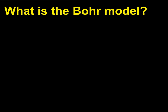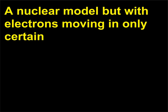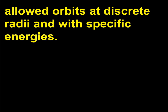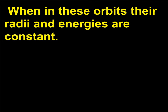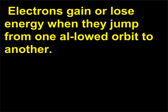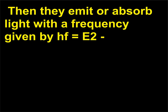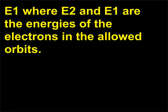What is the Bohr model? It is a nuclear model with electrons moving in only certain allowed orbits at discrete radii and with specific energies. When in these orbits, their radii and energies are constant and the atoms do not emit or absorb radiation. Electrons gain or lose energy when they jump from one allowed orbit to another; they then emit or absorb light with a frequency given by hf = E₂ − E₁.